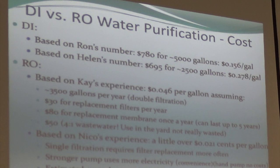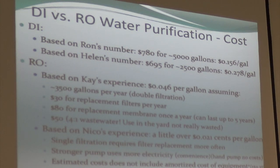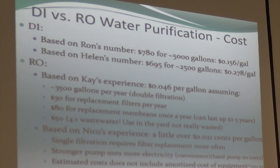For costs: Ron spends about $780 for about 5,000 gallons — about 16 cents a gallon. Another user pays a monthly rental fee plus replacement tank and gets about 2,500 gallons for about 28 cents a gallon. Kai's system — a combination of RO and DI — gets his down to about 5 cents a gallon. My method costs about 2.5 cents per gallon because I buy bigger filters and get more water through them.